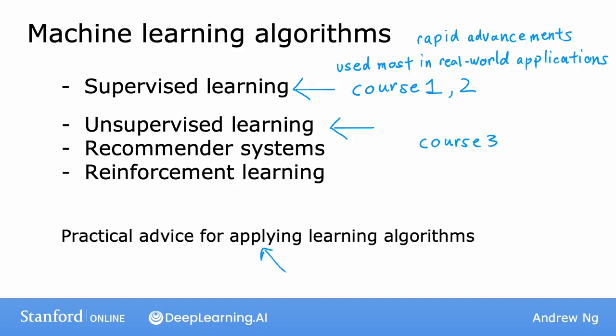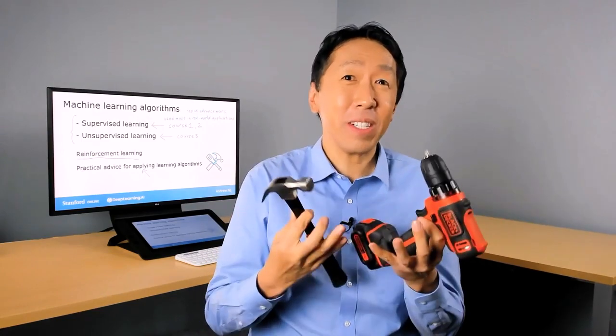This is something I feel pretty strongly about. Teaching learning algorithms is like giving someone a set of tools, and equally important — or even more important — than having great tools is knowing how to apply them. What good is it if someone gives you a state-of-the-art hammer and hand drill and says 'good luck, now you have all the tools you need to build a three-story house'? It doesn't really work like that, and so too in machine learning, knowing how to apply the tools effectively is critical.